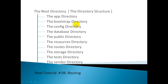Then the bootstrap directory. This directory contains files that bootstrap the framework and configure autoloading. And then the config directory, which contains all of the application's configuration files. The database directory contains the database migrations and seeds. And then comes the public directory, which contains the index file — the entry point of all requests entering the application.